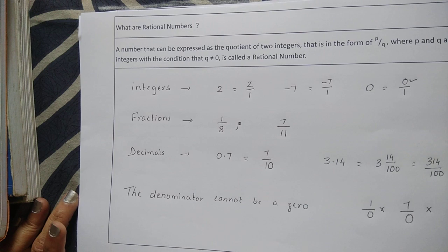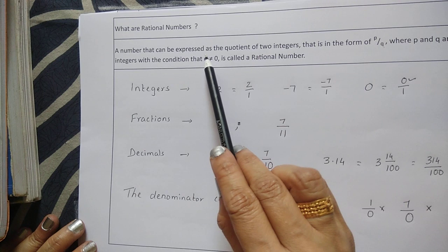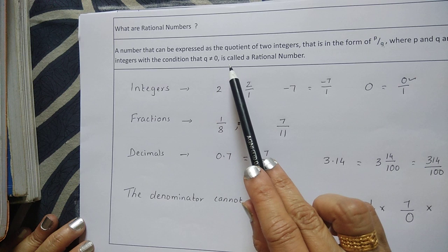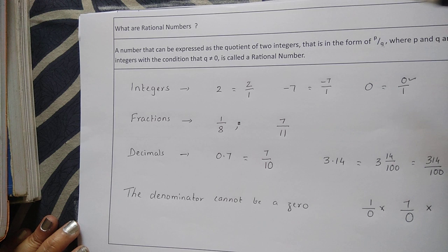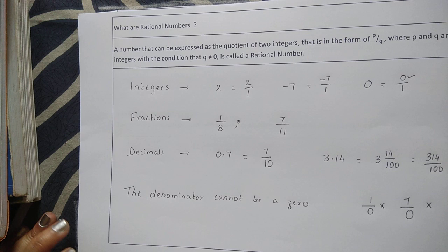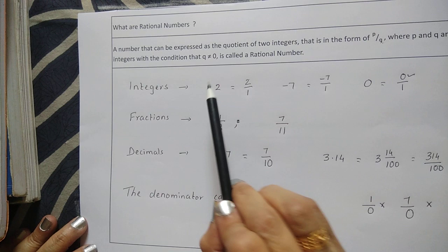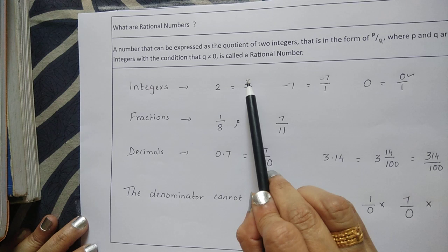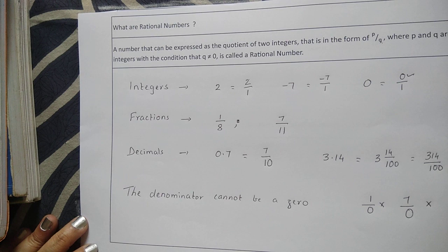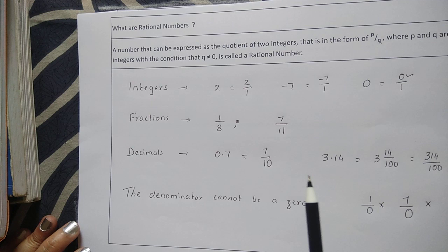Now let us go into detail. What are rational numbers? A number that can be expressed as the quotient of 2 integers — that is, in the form p/q where p and q are integers with the condition that q is not equal to 0 — is called a rational number. Now all the integers can be expressed as rational numbers. For example, 2 can be expressed as 2/1; minus 7 can be expressed as minus 7/1; and 0 as 0/1.